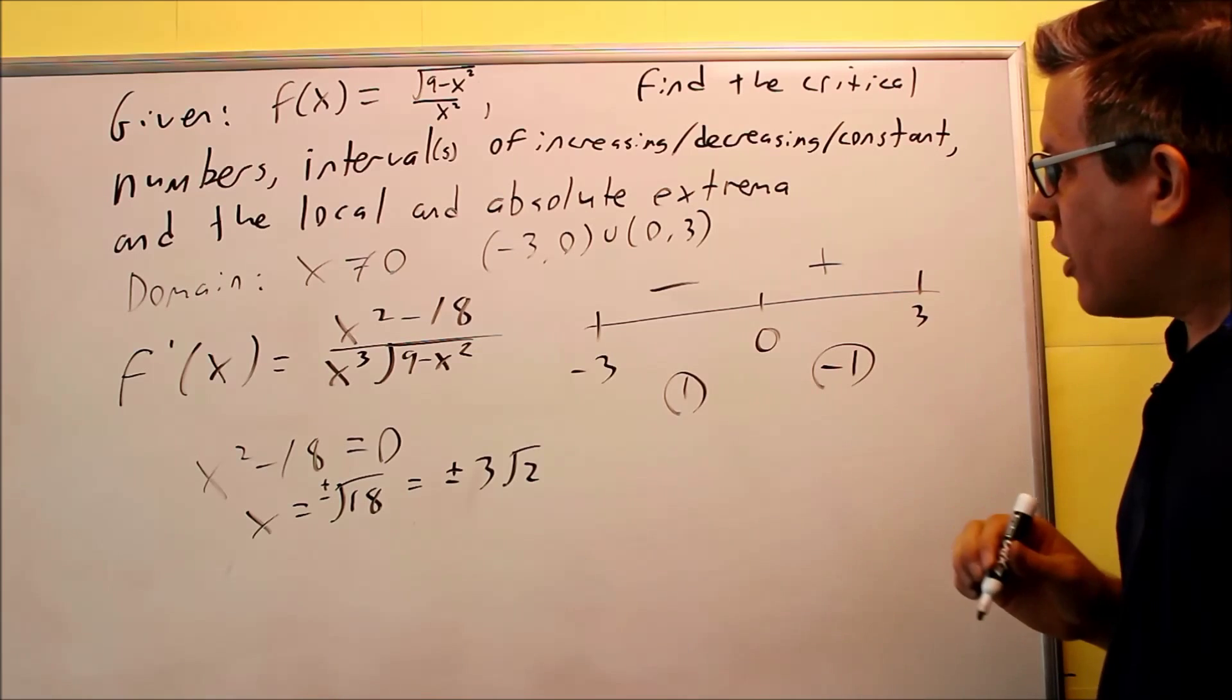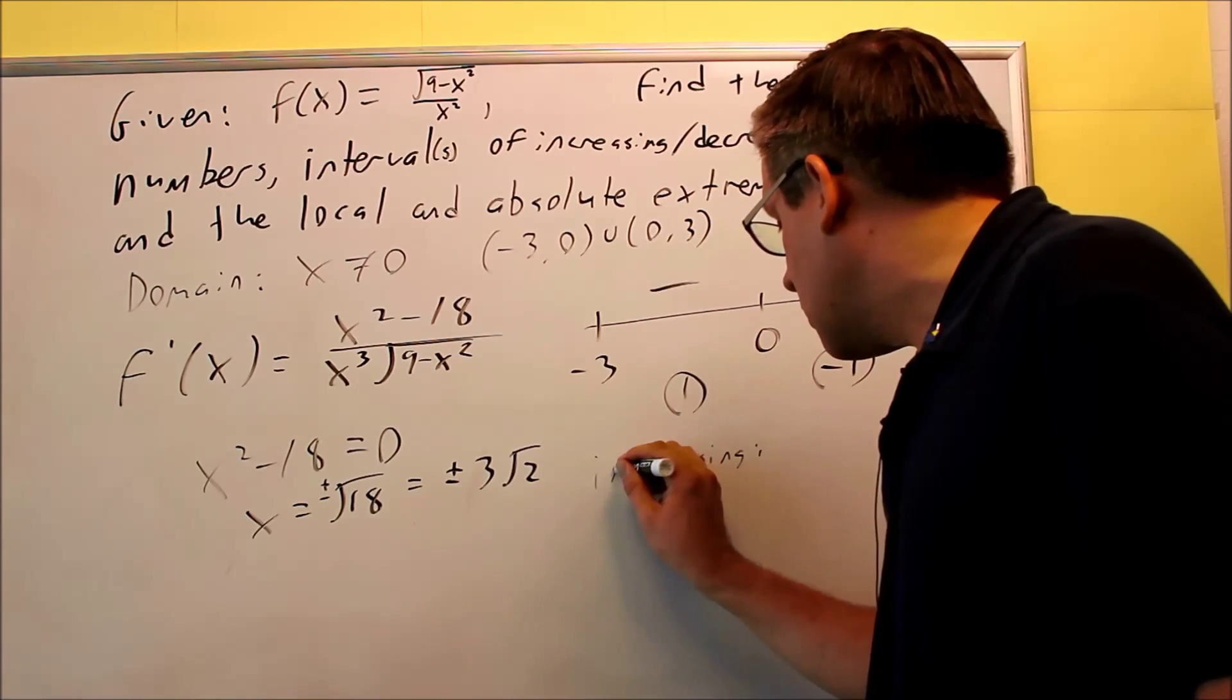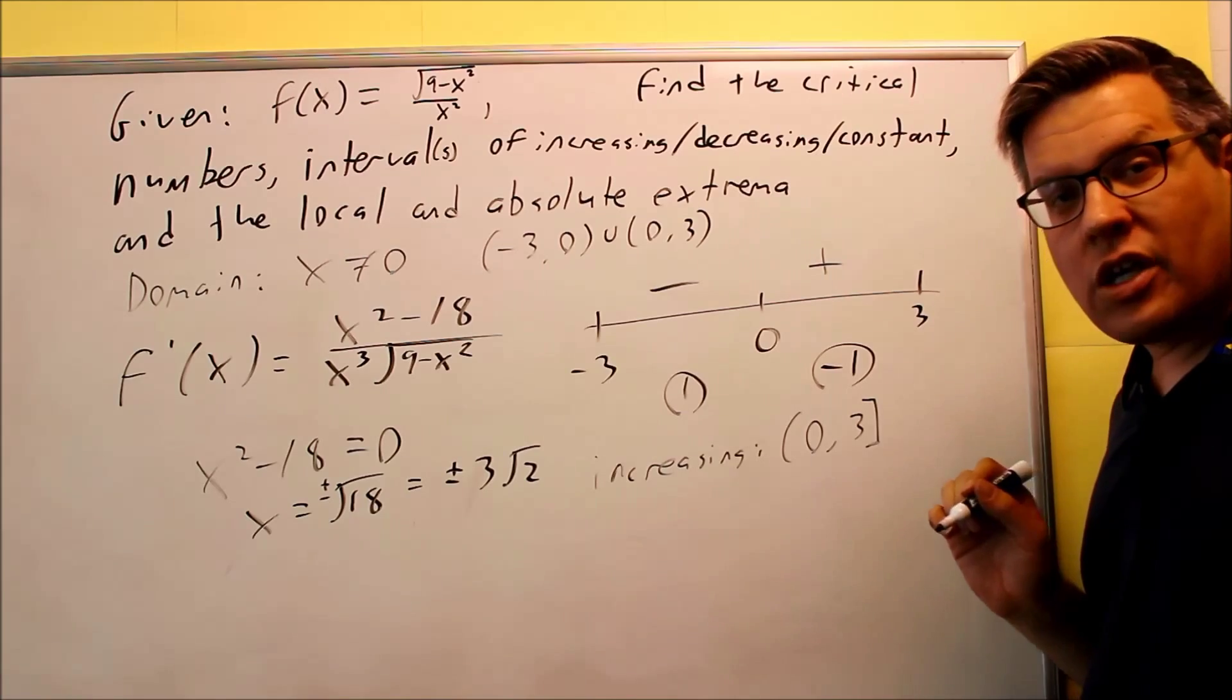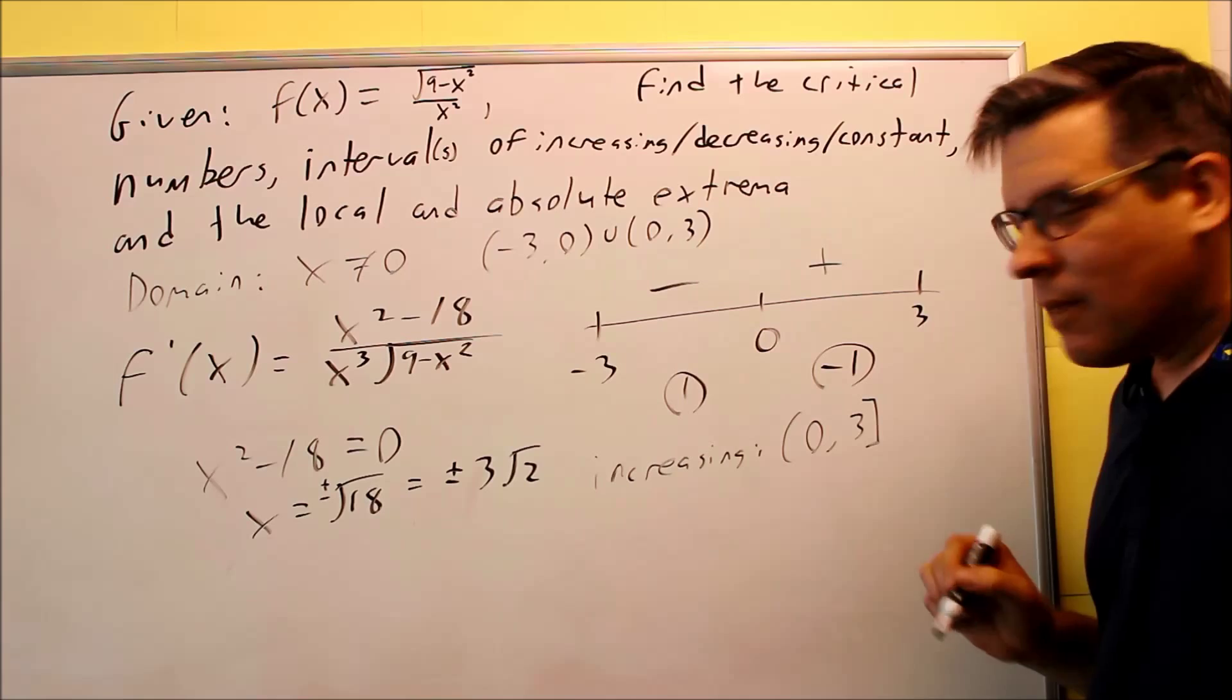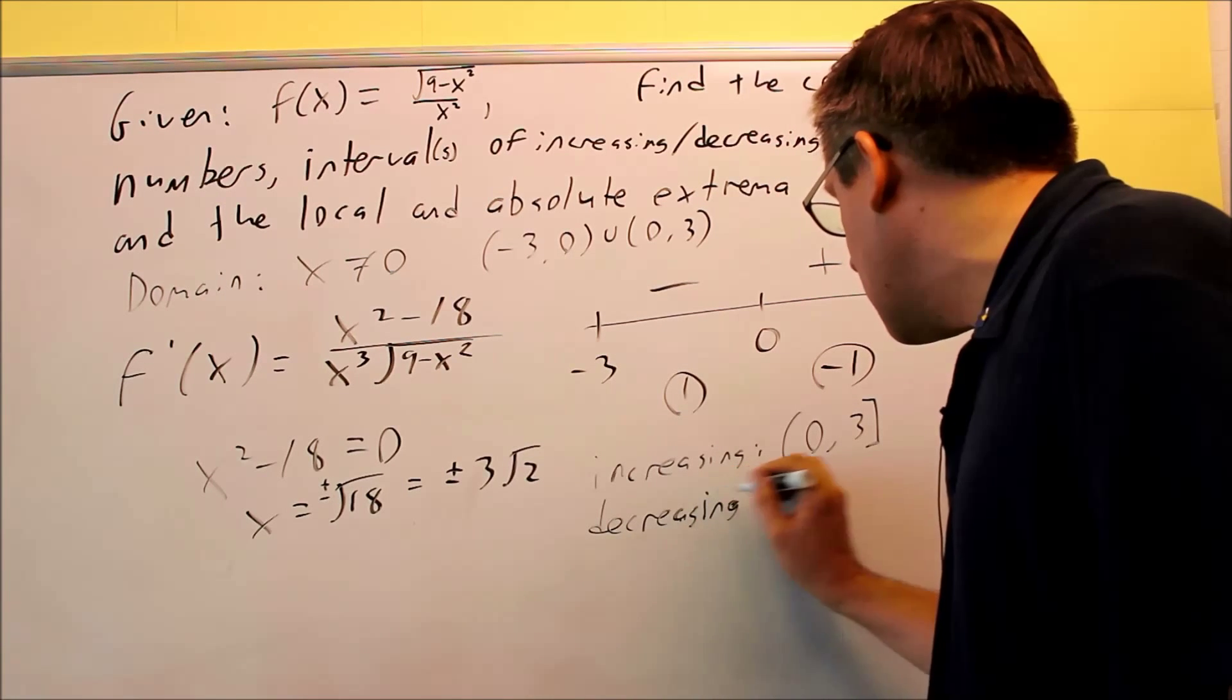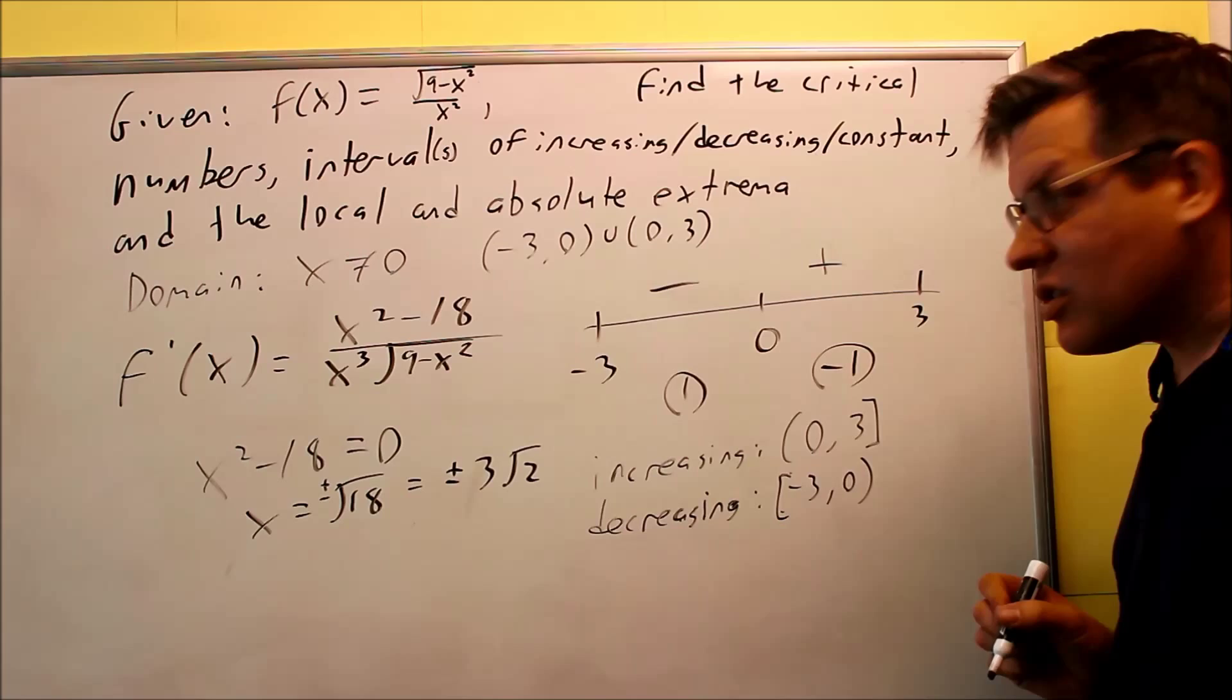So now I'm ready to write the increasing and decreasing. So increasing is where I have a plus. So increasing, I'm going to write 0 to 3. And 3, I'm actually going to include the 3 on the end. 3 can be included here in this case. That's the end point. It's not going to be infinity because, remember, the domain only goes up to 3. Decreasing is going to be from negative 3. That's going to have a bracket on that end, negative 3 to 0. So that's your increasing and decreasing intervals.